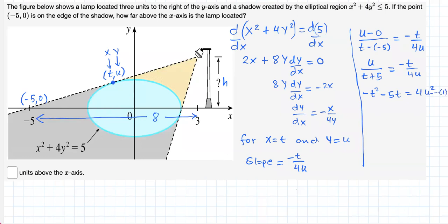Now, t comma u belongs to the ellipse, so its coordinates should satisfy the equation of the ellipse. So we'll have t squared plus 4u squared equals 5. Let's call it equation two.